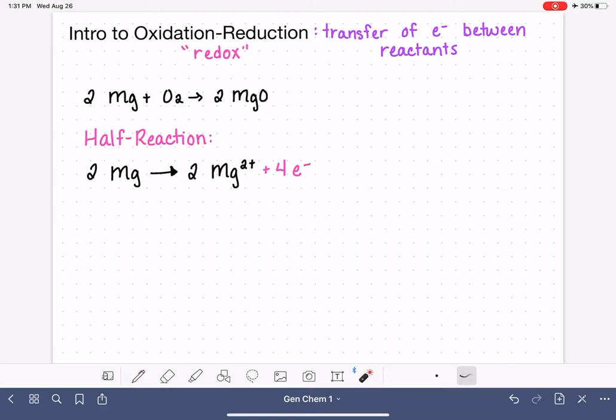So these four electrons are just being lost by the magnesium atom, allowing it to become an ion. And that's one of the half reactions. This particular half reaction is referred to as the oxidation part of the oxidation reduction reaction.